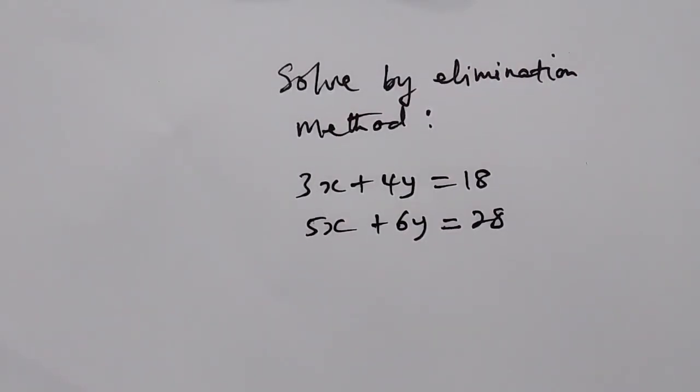Welcome to this channel. Let us solve the following problem by elimination method. 3x plus 4y is equal to 18, 5x plus 6y is equal to 28. So we want to apply the elimination method.